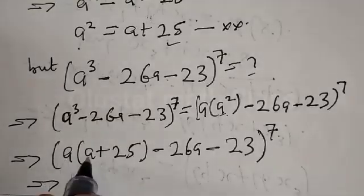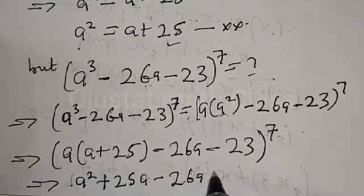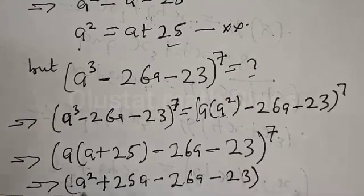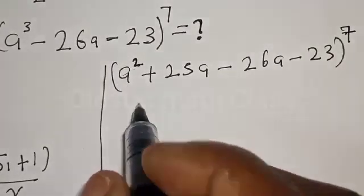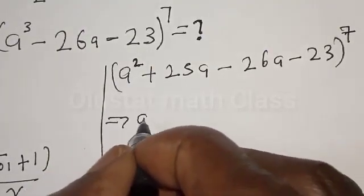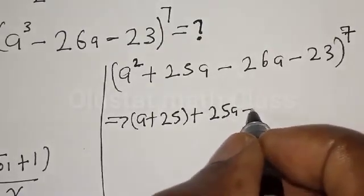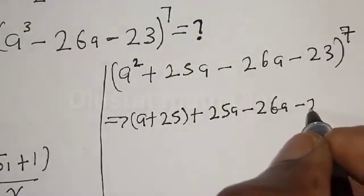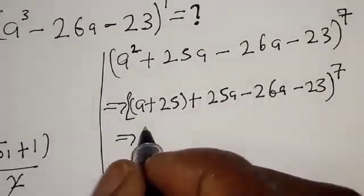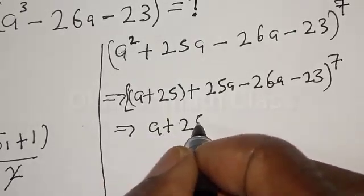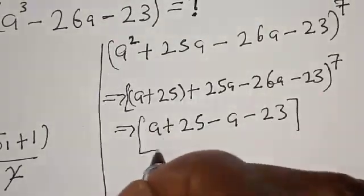Opening the bracket, we have a squared plus 25a minus 26a minus 23, all raised to power 7. Here we again have a squared, and our a squared equals a plus 25. Substituting, we get a plus 25 plus 25a minus 26a minus 23, raised to power 7.